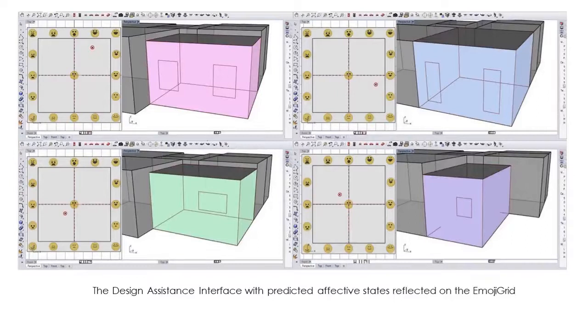Now we come to design assistance. The predicted valence and arousal ratings as computed by the regression models would be converted into a point on the emoji grid and displayed within the Rhino model space. Any changes to the formal attributes of the enclosure being designed would result in the point being updated on the grid. This allowed for real-time predictive analysis of the affective impact of design decisions or design alterations.